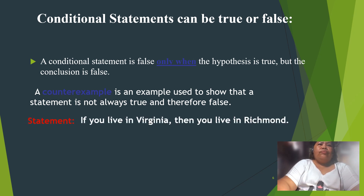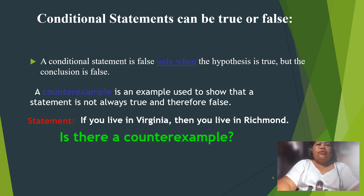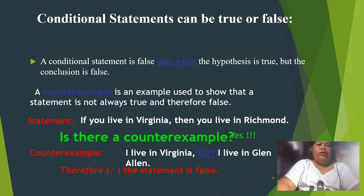Consider the statement: if you live in Virginia, then you live in Richmond. Is there a counter example? Yes. A counter example: I live in Virginia, but I live in Glen Allen. Therefore, this statement is false.